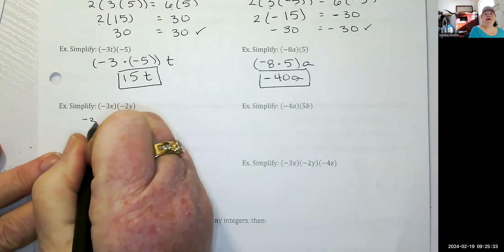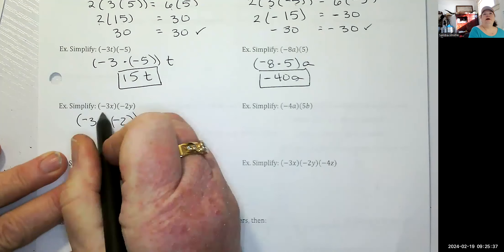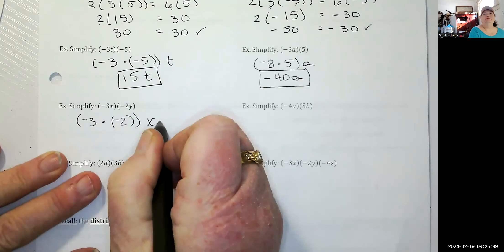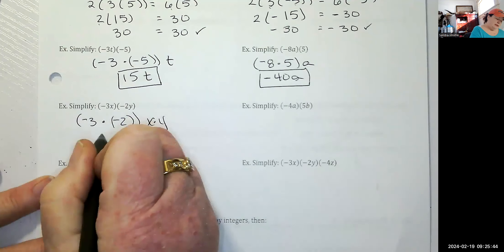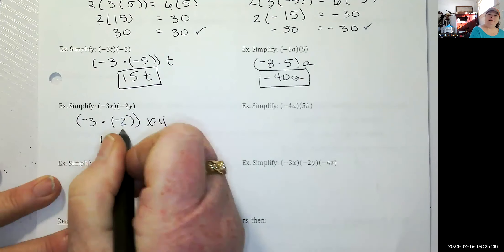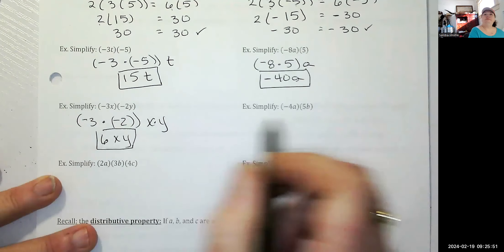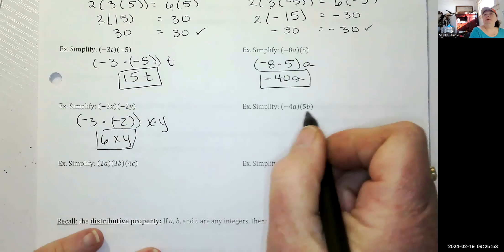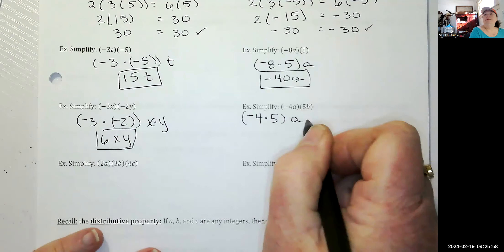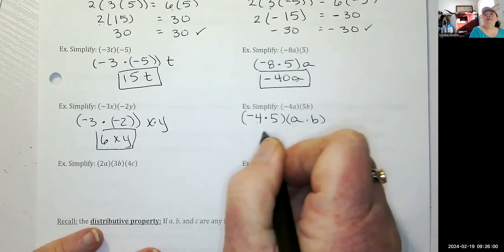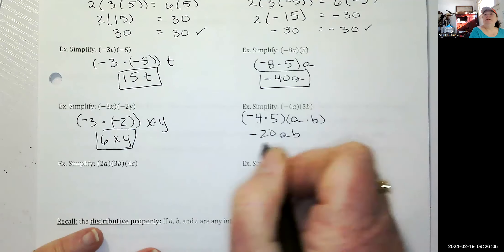Next: negative three times negative two, then x times y. Three times two is six, the signs are the same so it's positive 6xy. Then negative four times five, and A times B: four times five is 20, the signs are different — negative times a positive is a negative — so it's negative 20AB.